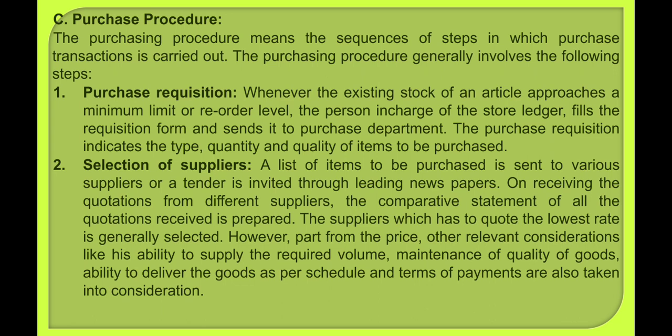Whenever the existing stock of an article approaches a minimum limit or reorder level, the person in charge — the store keeper — will fill out a purchase requisition. When the material reaches the minimum level, it will trigger a reorder. The requisition will indicate the type of material required, which is the finished item details needed for the purchase.